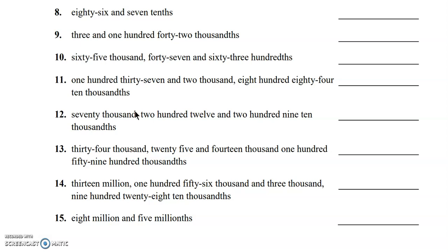I'm going to start with the whole number, 70,212, and then a decimal point. 209 ten-thousandths — the ten-thousandths is in the fourth position, and I have 209, so the nine is going to end up in that position. I will need a zero in the tenths place, so: 0, 2, 0, 9.